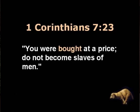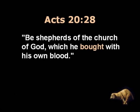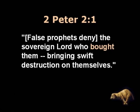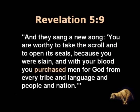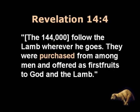1 Corinthians 7:23: You were bought at a price. Do not become slaves of men. Acts 20:28: Be shepherds of the church of God, which he bought with his own blood. 2 Peter 2:1: False prophets deny the sovereign Lord who bought them. Revelation 5:9: And they sang a new song — you were worthy to take the scroll and open the seals, because you were slain, and with your blood you purchased men for God, from every tribe and language and people and nation. And then finally in Revelation 14:4: The 144,000 follow the Lamb wherever he goes. They were purchased from among men, and offered as firstfruits to God and to the Lamb.